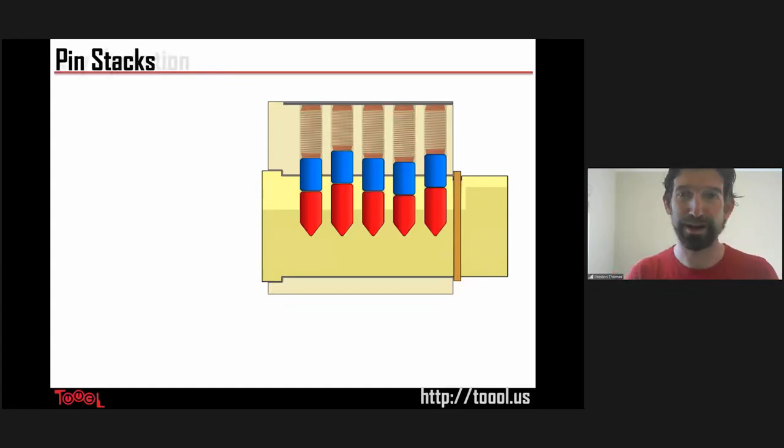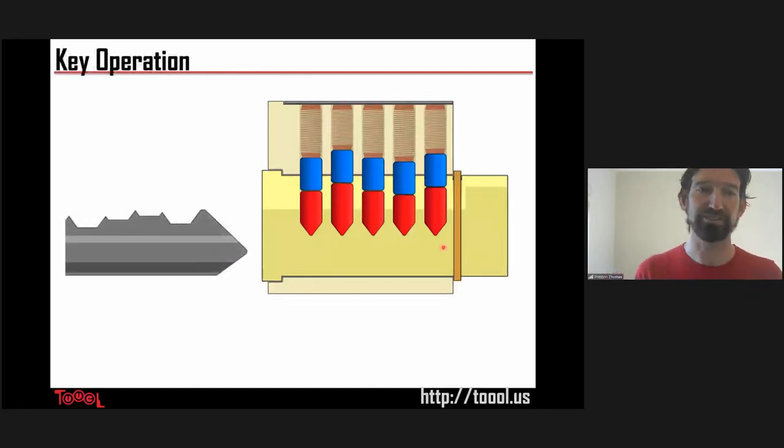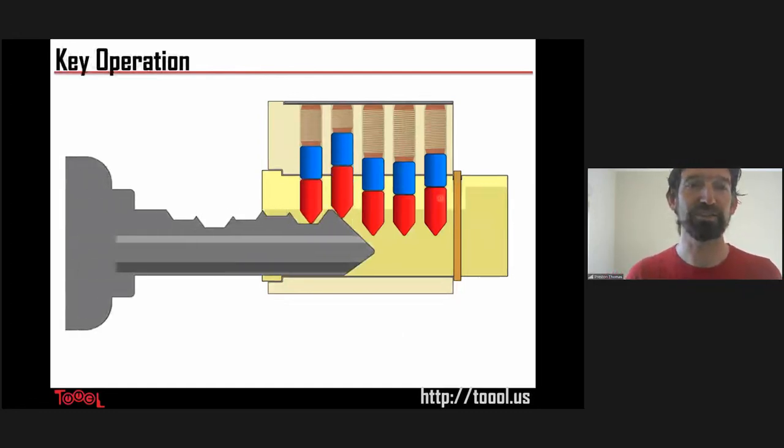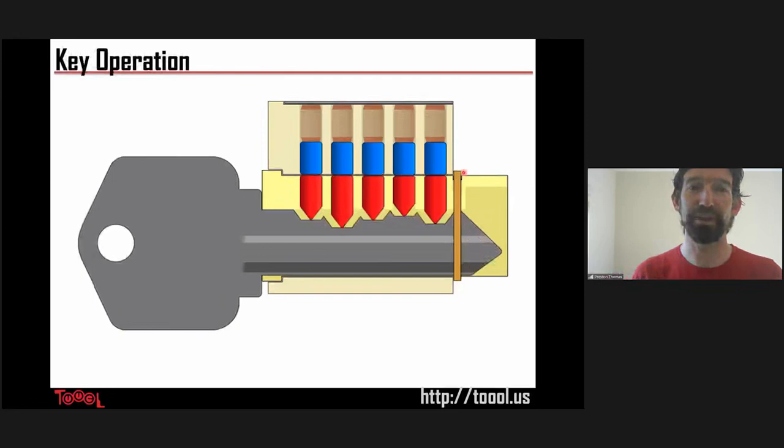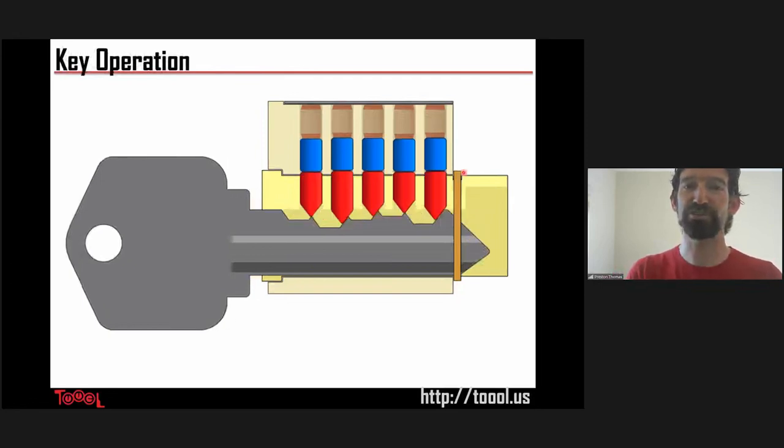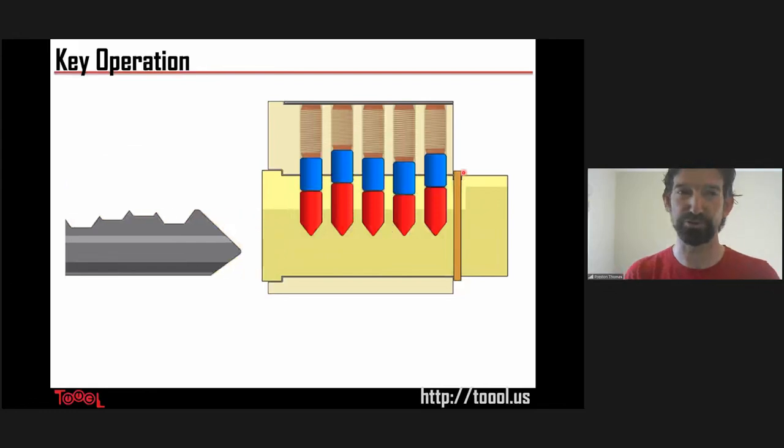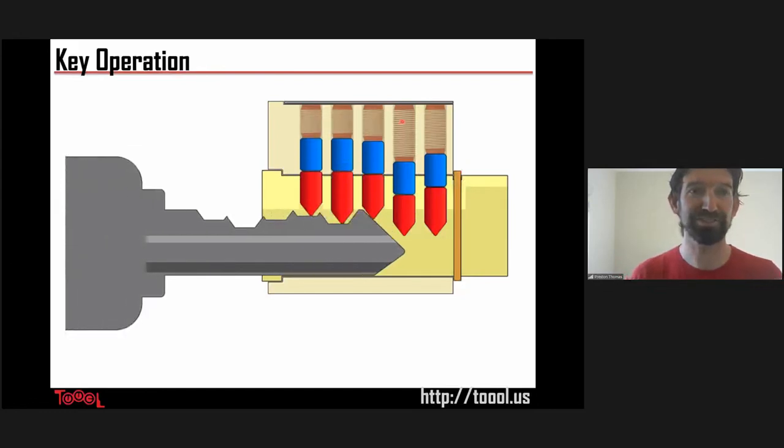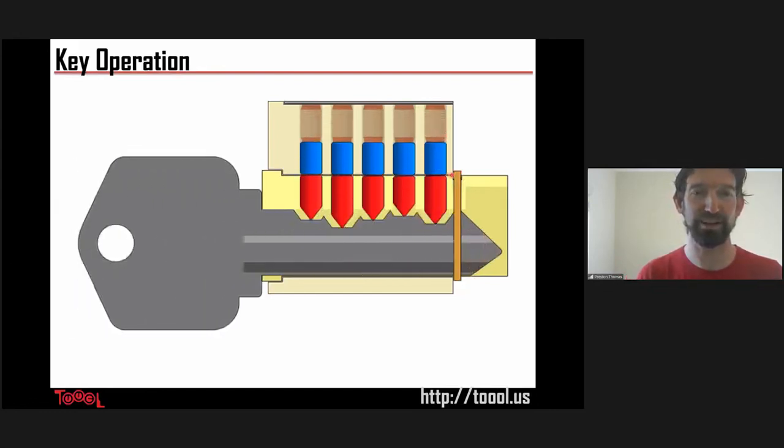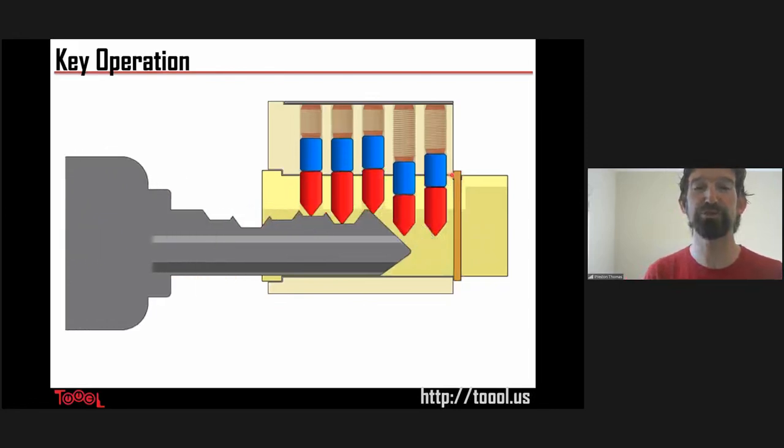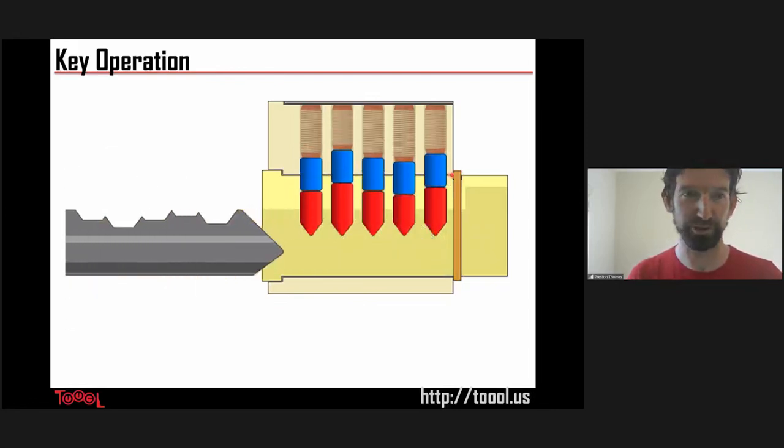Now, if you have the right key for the lock, it slides in, you'll watch the driver pins go up and down, the key pins go up and down, and when it's finished, there's a nice clear shear line. You pull the key back out, everything returns to its resting state, and the lock is locked again. One more time, the springs give way, and then they push everything back down to its resting state, to its new resting state with a clear shear line.